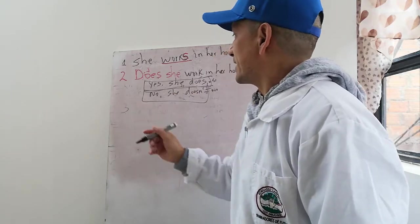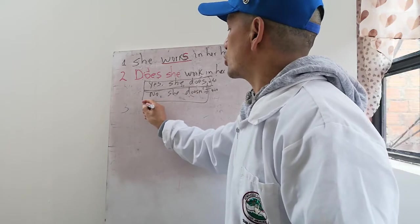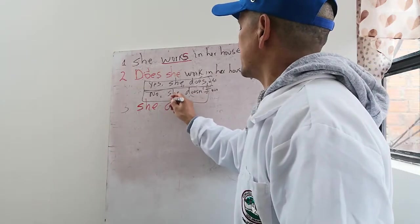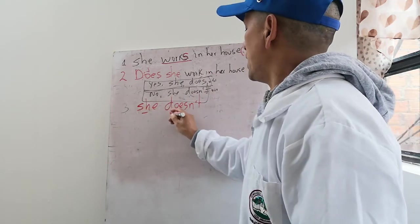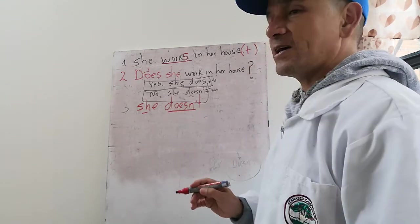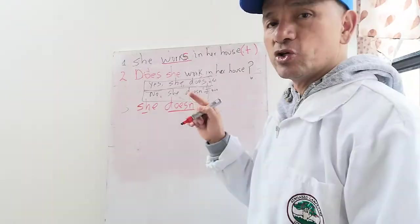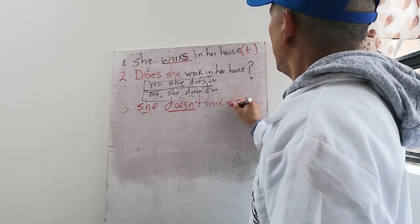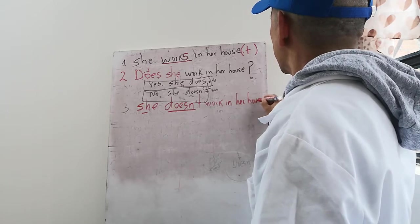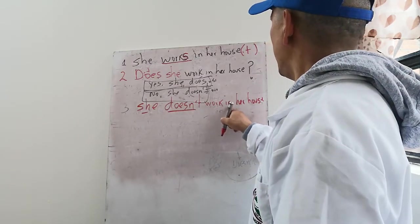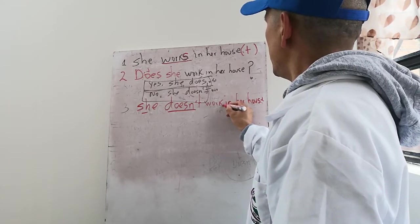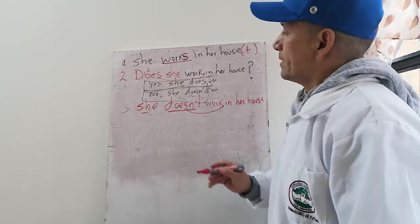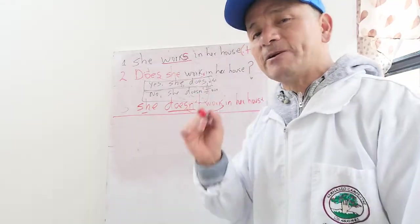La tercera regla dice que yo debo aprender a decir NO. Entonces cuando yo tengo she y quiero decir NO pues debo utilizar la palabra DOESN'T. She doesn't, entonces ella no. She doesn't work in her house, y ahí diría ella no trabaja en la casa. Note que aquí no le agregamos S porque ya la lleva acá, igual que la pregunta, no le colocamos S porque aquí ya la lleva.